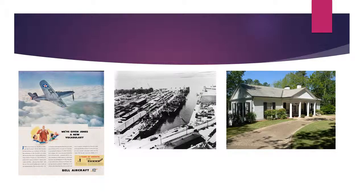As with World War I, once war was declared, Georgians sprang into action. Many Georgians fought and died in the Army, Navy, and Marines. The military camps in the state became bases due to the large influx of military men and material. Georgians also became more industrialized as Bell Aircraft Company started building bombers, and the Navy shipyards in Brunswick and Savannah built Liberty ships to aid in the war effort.